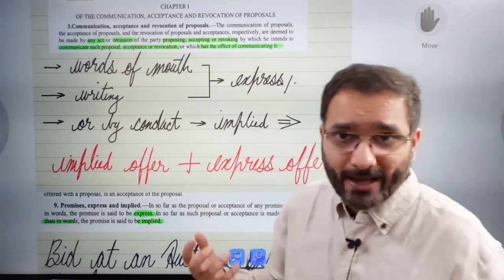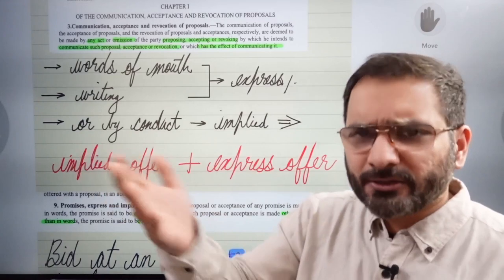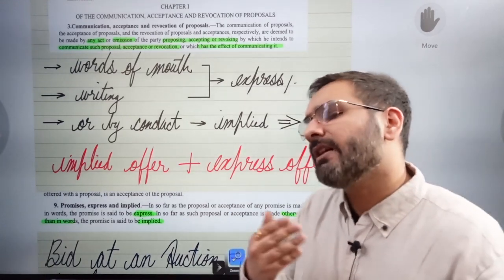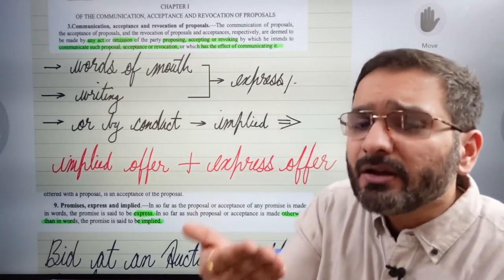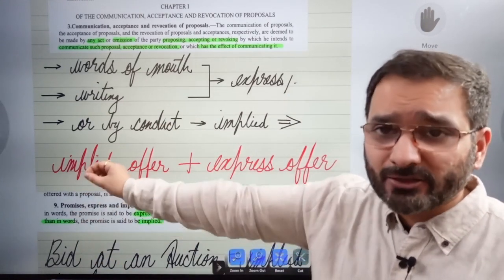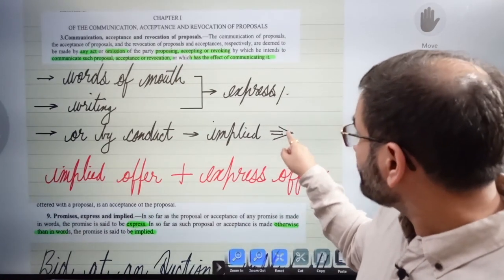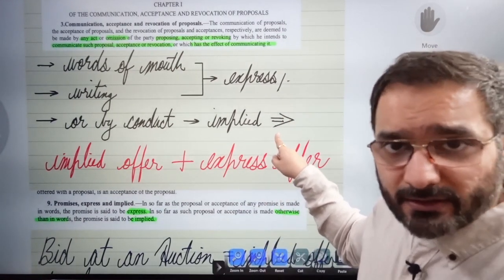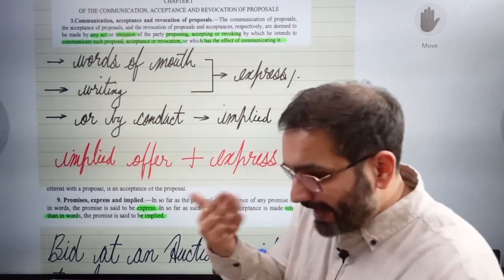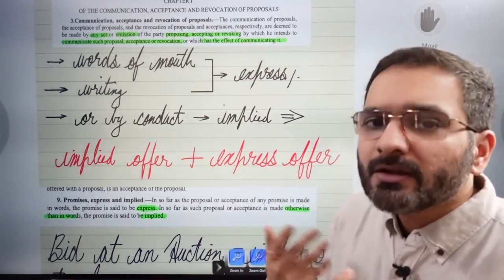How do you communicate? By words of mouth or writing — we call these express offers, where you directly tell the other party. Or by conduct — an implied offer. For example, if you want to ask someone out, you send them messages, buy them things, and express your feelings not via words but by conduct. By words or writing: express offer. By implication or conduct: implied offer.